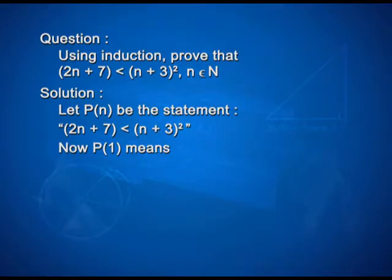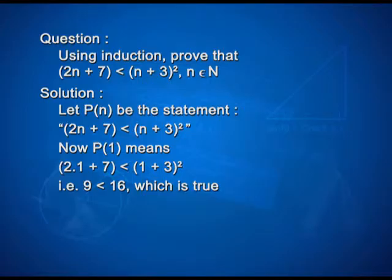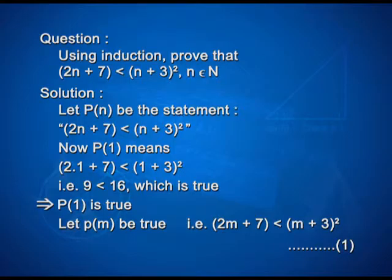Now p(1) means 2×1 plus 7 is less than (1+3)². On simplification, we get 9 is less than 16, which is obviously true. Therefore p(1) is true. Let p(m) be true, that is 2m plus 7 is less than (m+3)². Take this equation as number 1.